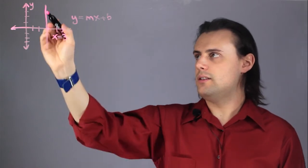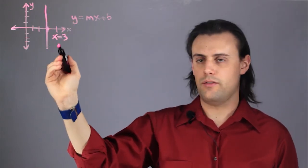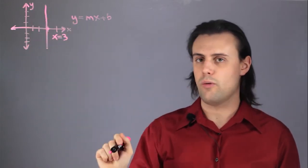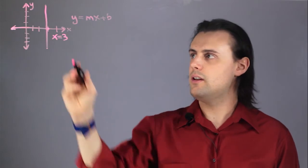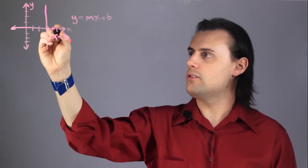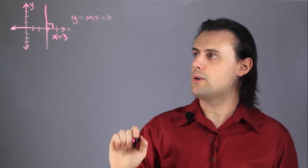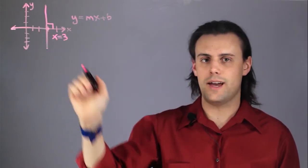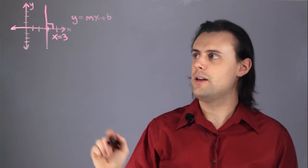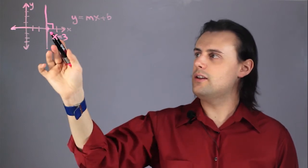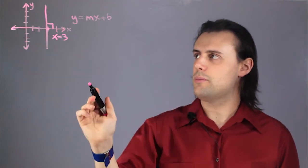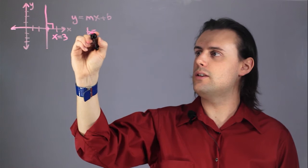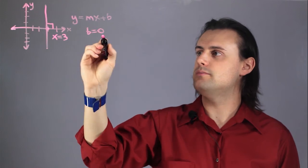Since this vertical curve is by definition parallel to the y axis, meaning there's a 90 degree angle between the curve and the x axis, that means that it will never intercept the y axis. So we know that b is equal to 0.